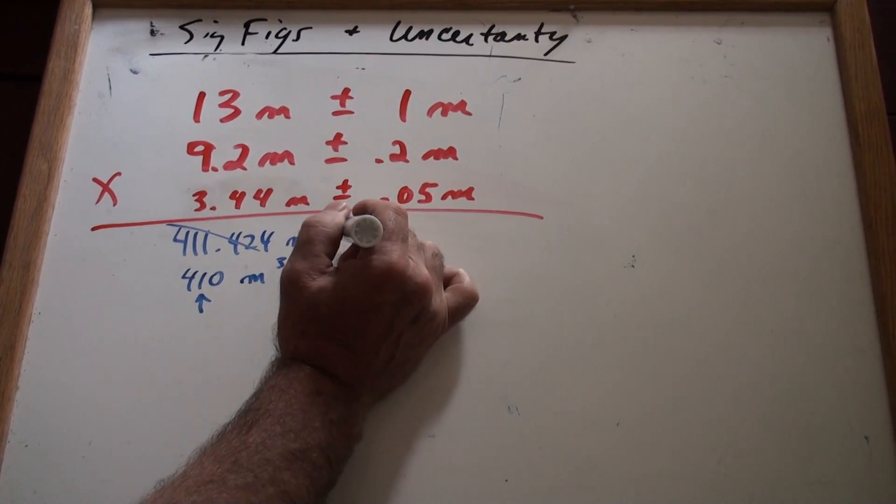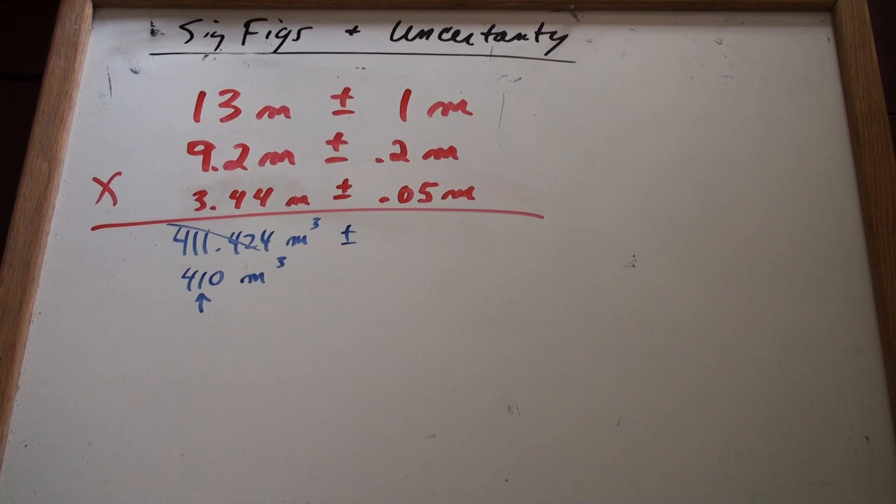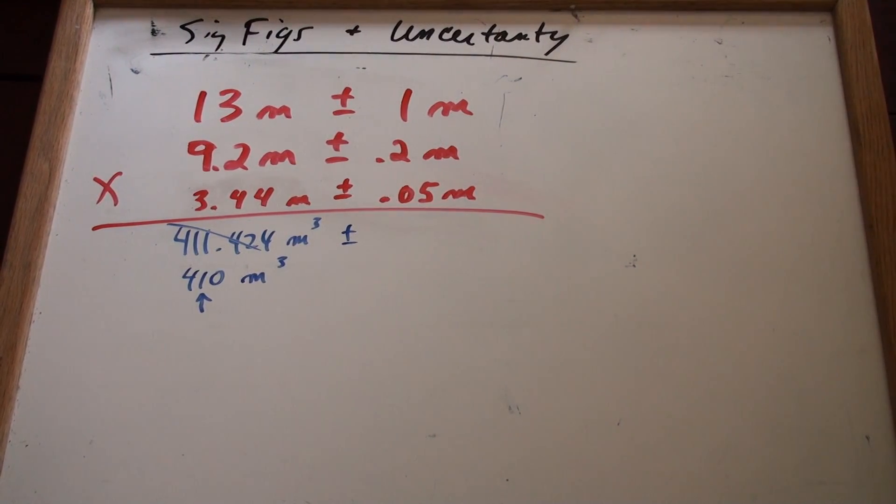Now what about uncertainty? Oh, here comes the tricky part. How do you figure out the uncertainty? Well that packet taught you two ways. One way I call high-low and the other way I call percent uncertainty. The first one is high-low. What do you do for high-low? Well,